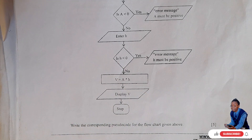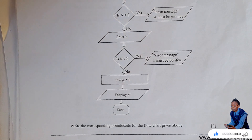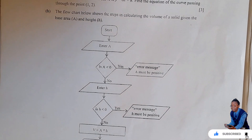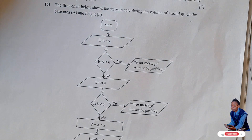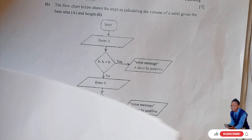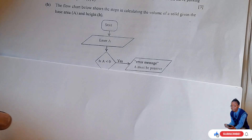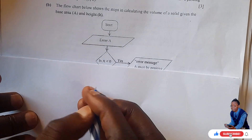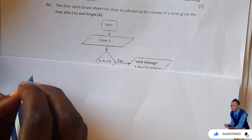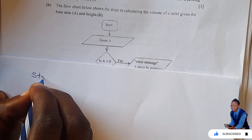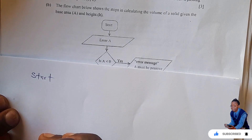This is very simple. We are given this flowchart and you are asked to come up with a program which is a pseudocode. So how do you answer this question? You are going to start with the first one, which is START — you begin with the start here.